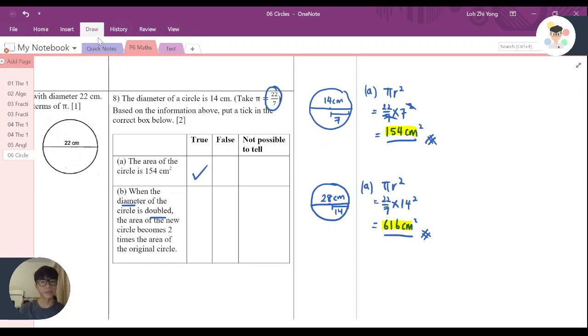After comparing this and this, do you think is it double or is it like 4 times? Just do a quick check. You can use a calculator and do 616 divided by 154. You'll notice that the answer is 4. It's actually 4 times instead of the mentioned 2 times.